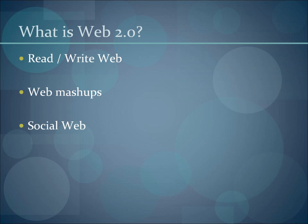Blogs and wikis are two excellent examples of this. Web 2.0 services typically also have easy ways to combine or mash up data from different online services — pulling YouTube content into a VoiceThread is but one example. Finally, the term Web 2.0 has come to be practically synonymous with the social web, because these services often allow you to connect with others, similar to what Twitter does.